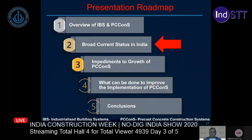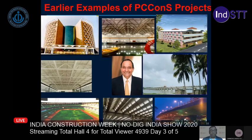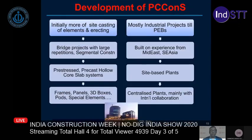Coming to the broad current status in India: many industrial structures were done in earlier days using precast concrete construction, and precasting is very popular for bridge structures. Buildings are becoming quite popular now, both for commercial and residential use. Initially there was more side casting of elements; later we had large bridge projects with repetitions such as metro projects in various urban cities with segmental construction, then precast concrete hollow-core slabs, frames, panels, 3D boxes, and special elements. For industrial structures, we had precast concrete trusses until pre-engineered buildings took over for the outer shell.